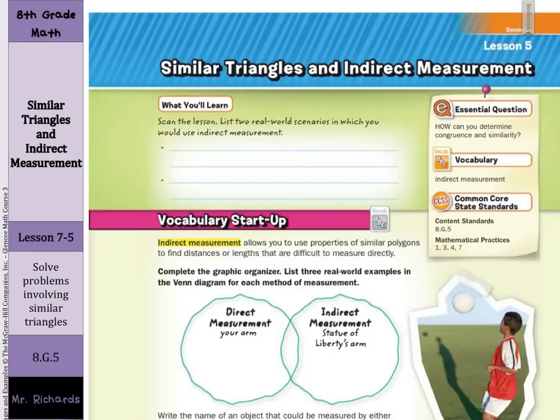Our objective is to solve problems involving similar triangles. If you were to scan this lesson and list two real-world scenarios in which you would use indirect measurement, you would find that you would be able to find the height of a tree.